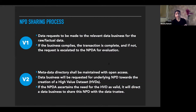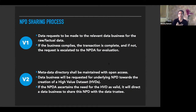In version two, the data sharing process is through high value data sets. A high value data set would be a directory of metadata selected by different data businesses, and there shall be open access to this metadata directory. Data requesters can avail access to these high value data sets from the data trustees. According to the new report, data trustees should have non-discriminatory access to such data. Private entities making data requests to other private entities through voluntary sharing are not covered under the non-personal data governance framework.